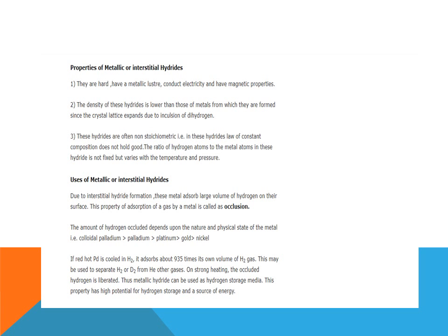Properties of metallic or interstitial hydrides: number 1, they are hard, have a metallic luster, conduct electricity, and have magnetic properties. Number 2, the density of these hydrides is lower than that of the metals from which they are formed, since the crystal lattice expands due to involvement of dihydrogen. Number 3, these hydrides are often non-stoichiometric, that is, the law of constant composition does not hold good. The ratio of hydrogen atoms to metal atoms in these hydrides is not fixed.